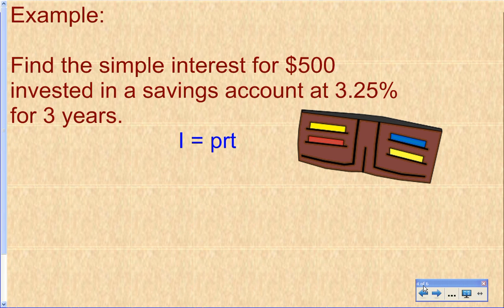So let's look at an example. Find the simple interest for $500 invested in a savings account at 3.25% for three years. So the first value we have is our $500, $500 invested in a savings account. So this is our P value at 3.25%. That's our rate, but we've got to change this into a decimal. Two places to the left, it's 0.0325.